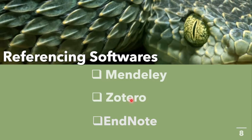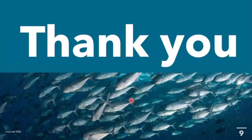These referencing softwares are so important because they help you put your references together and can format them to suit your institution's requirements — whether Vancouver, APA, or Harvard. They will gather all your references in the bibliography. As soon as you click 'insert bibliography,' it collects all in-text references and presents the full reference list, making your work much easier. I always recommend students have a referencing software as they write their discussion.